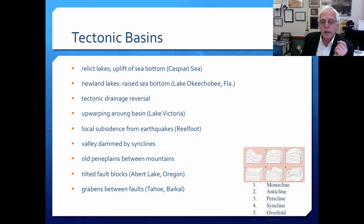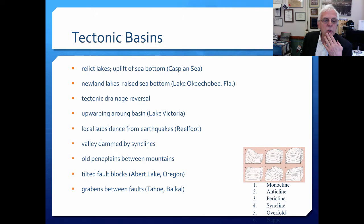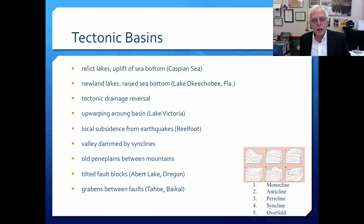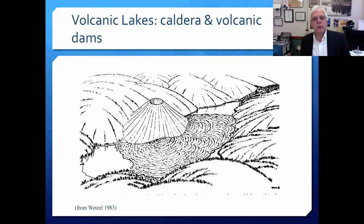Tectonic basins can be formed by virtually any kind of motion in the Earth's crust. There are relic lakes that are uplifted sea-bottom depressions, such as the Caspian Sea. Florida basically lifted up out of the sea, forming Lake Okeechobee and other lakes. Other tectonic processes include drainage reversal, upwarping around basins, local subsidence, valleys dammed by synclines, grabens between faults, and tilted fault blocks.